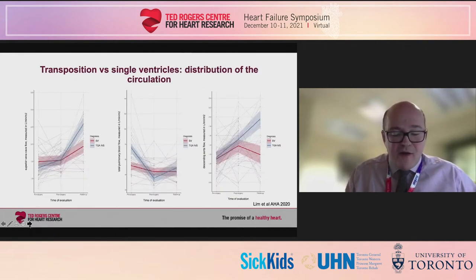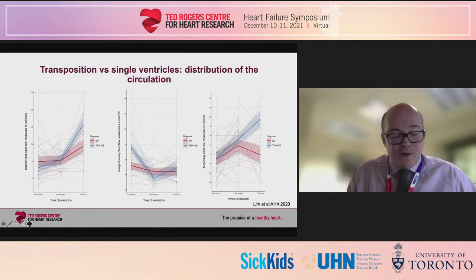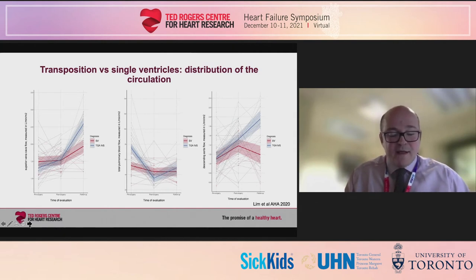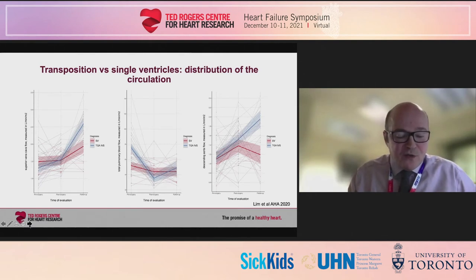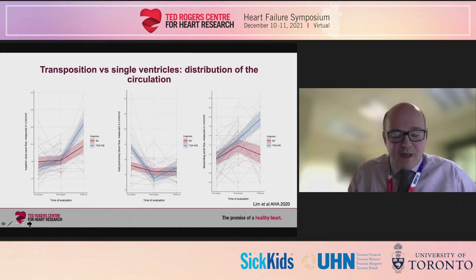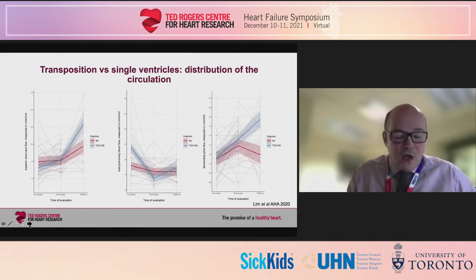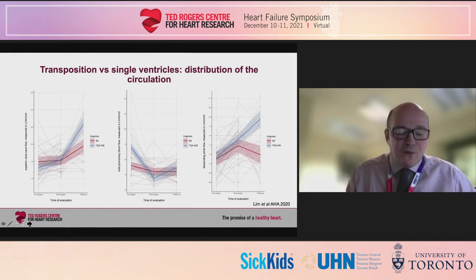Measurement of the distribution of flow elsewhere in the circulation revealed that venous return from the superior vena cava increased in both groups, more so in the transposition patients. Pulmonary blood flow was very high in preoperative patients with transposition but came under control with repair, and was similarly maintained in patients following single ventricle palliation. However, the most dramatic divergence was seen in descending aortic flow, which increased markedly in patients with transposition but declined in those with single ventricle hearts. We therefore conclude that the poor brain and body growth typical of infants with palliated single ventricle physiology is more likely the result of poor nutrition related to diminished gut perfusion than to cyanosis.